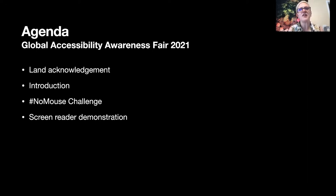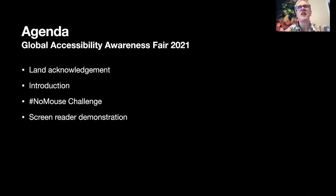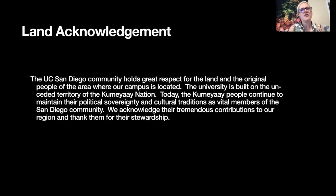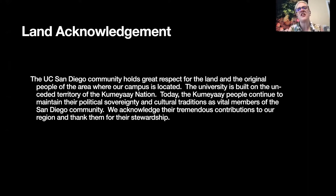For our agenda today, we're going to start with a land acknowledgement, introduce ourselves and the session, then have a no mouse challenge, followed by a screen reader demonstration, and then some practice describing images that everyone can participate in. Starting with our land acknowledgement: the UC San Diego community holds great respect for the land and the original people of the area where our campus is located. The university is built on the unceded territory of the Kumeyaay Nation. Today the Kumeyaay Nation people continue to maintain their political sovereignty and cultural traditions as vital members of the San Diego community. We acknowledge their tremendous contributions to our region and thank them for their stewardship.